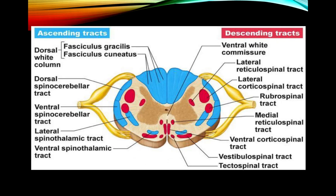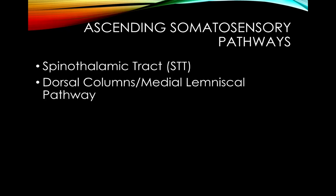This diagram shows ascending tracts in blue and descending tracts in red. The key ascending pathways are the spinothalamic tract and the dorsal columns — also called the dorsal column medial lemniscal pathway, because this pathway continues in the brain as the medial lemniscus. The spinothalamic tract keeps its name all the way from the spinal cord through the brain.